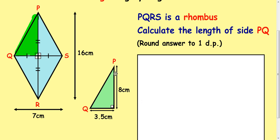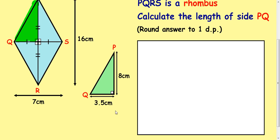And then we can just work out PQ doing a straightforward Pythagoras question. So PQ squared or C squared equals A squared plus B squared. Then we can go into PQ squared equals 3.5 squared plus 8 squared. It doesn't matter which way around you do it.